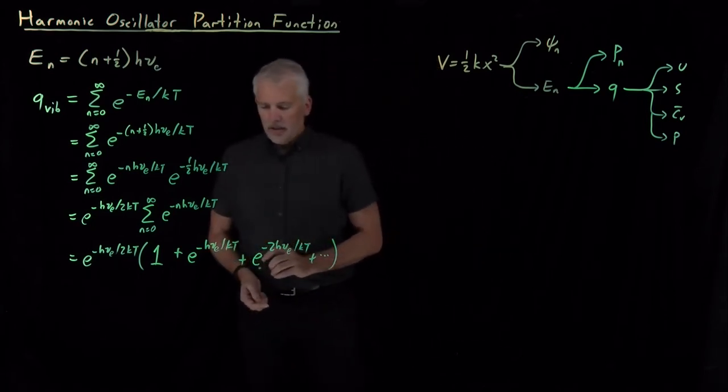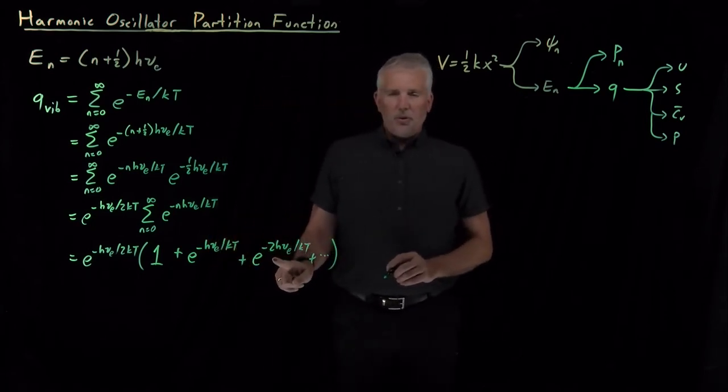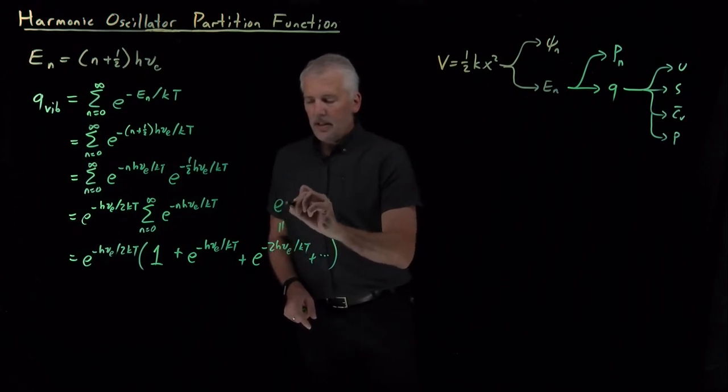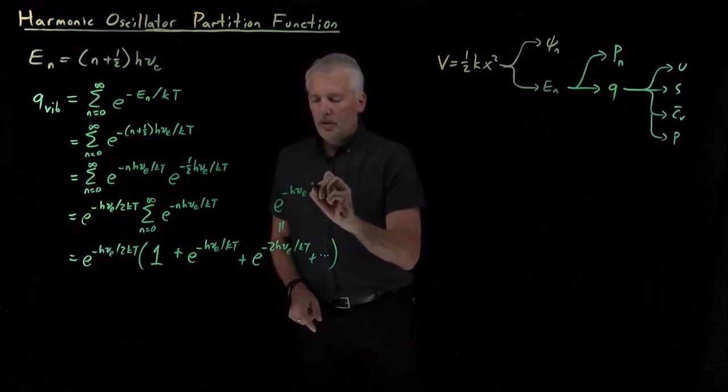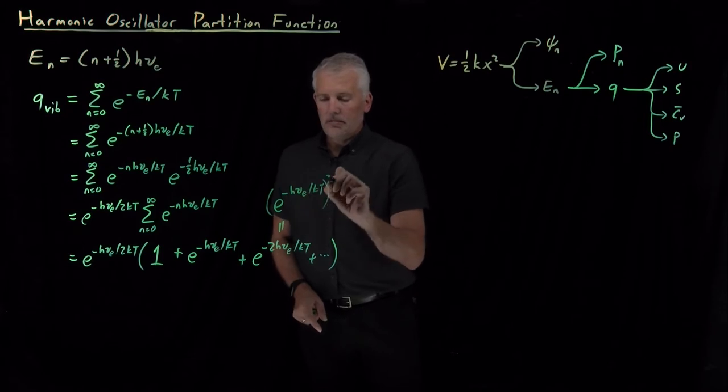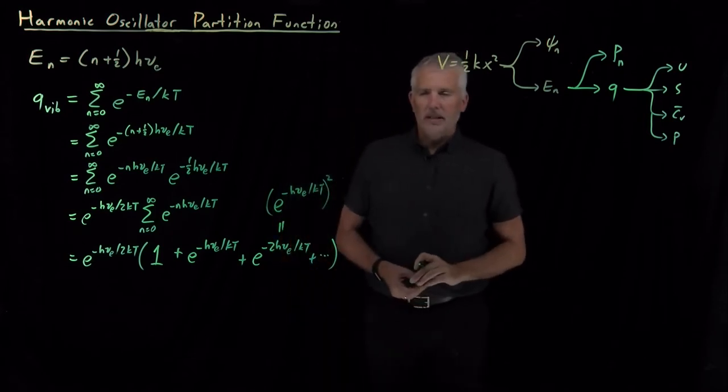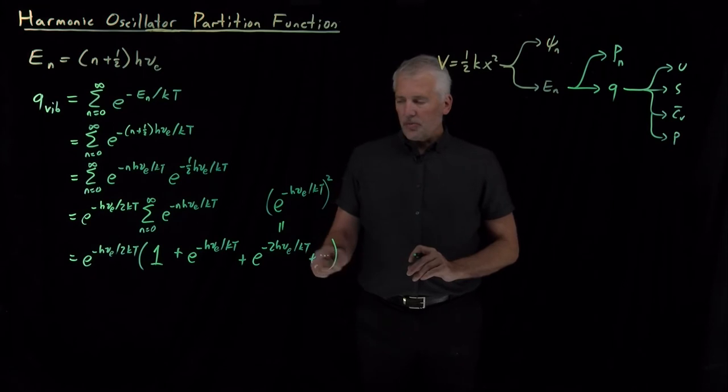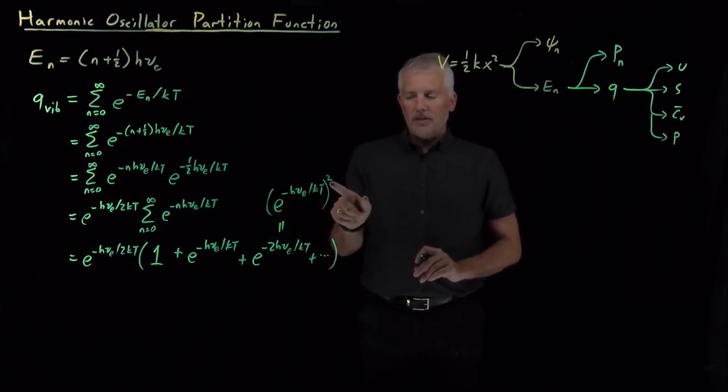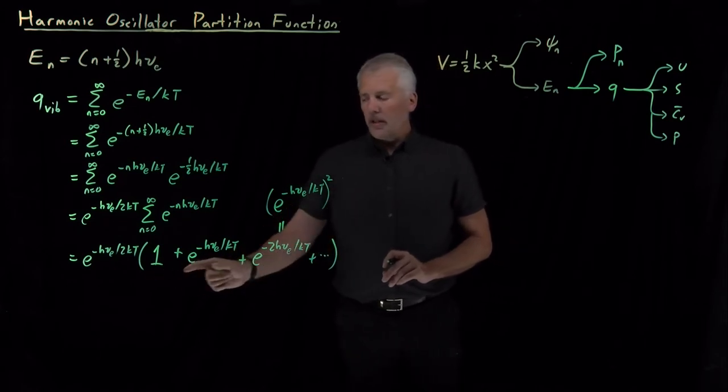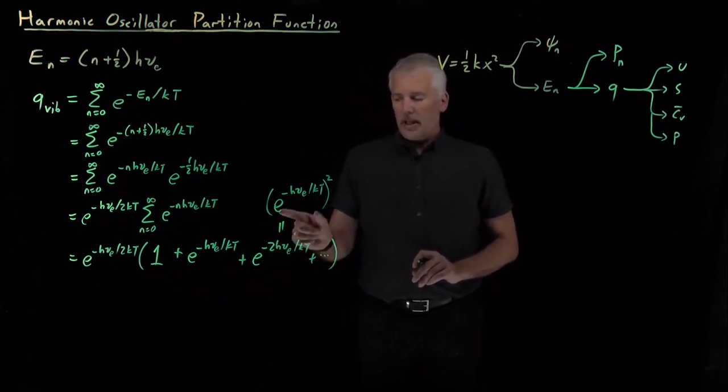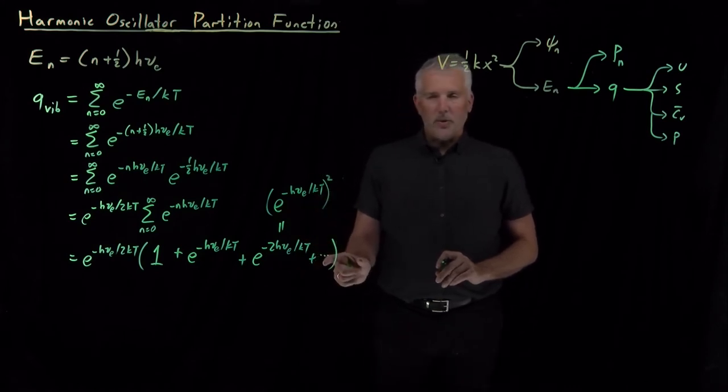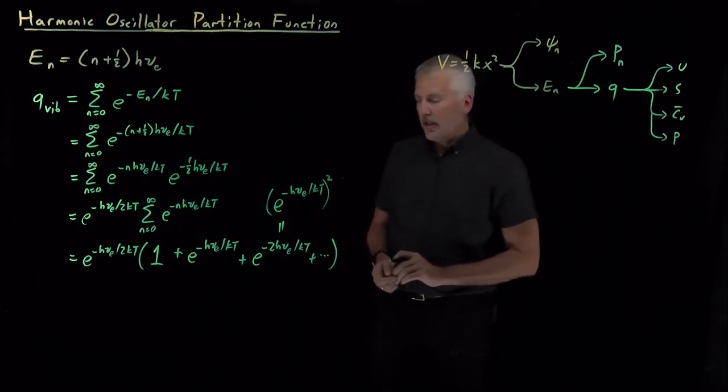But notice now, e to the minus 2hν/kT, that's the same thing as e to the minus hν/kT twice. e to the minus hν/kT squared. e to the minus 2x is like e to the minus x times e to the minus x. In fact, every one of these terms is going to be this basic Boltzmann factor, e to the minus hν/kT, raised to some power. I've got 1, e to the minus hν/kT, e to the minus hν/kT squared, e to the minus hν/kT cubed, to the fourth power, and so on.